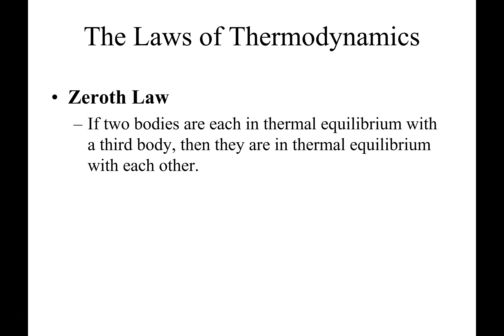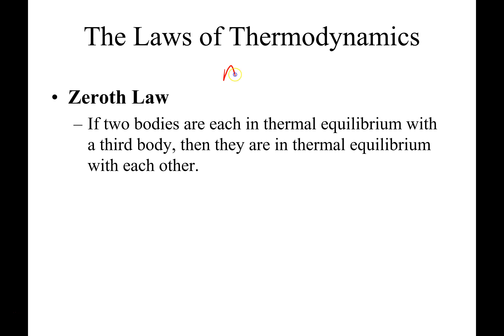The zeroth law — I call it the 'duh law' — says: if A is in thermodynamic equilibrium with C, and B is also in thermodynamic equilibrium with C, then A is in equilibrium with B. If A equals C and B equals C, then A equals B.